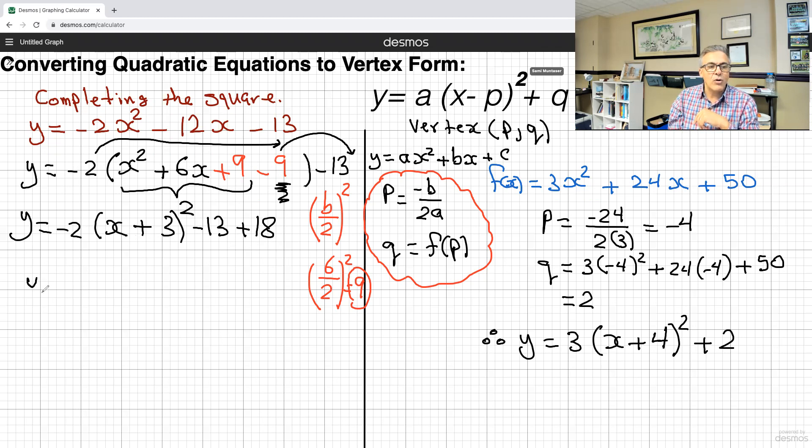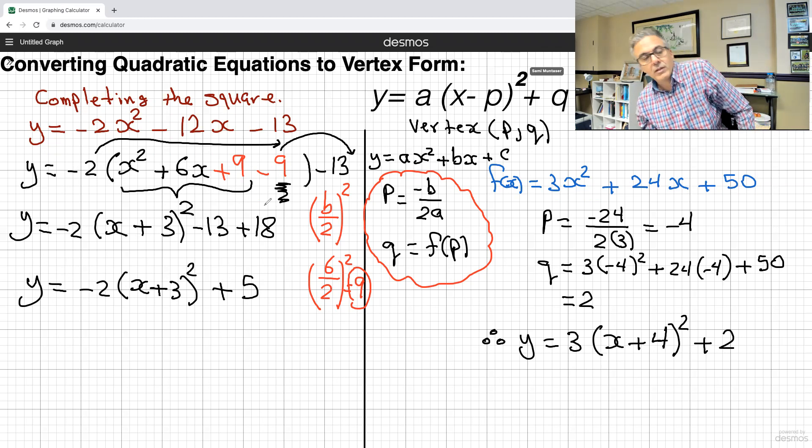Now let's finish this, y equals negative 2 brackets x plus 3 squared, and negative 13 plus 18 will give you plus 5, and these are the two ways to complete the square. Sorry, this is the two ways to convert from standard form to vertex form.